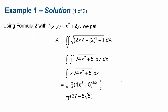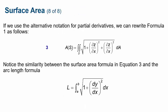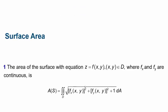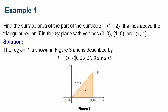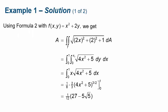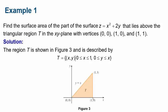Using our formula, take the partial derivative with respect to x — you get 2x — and we square that. The partial derivative with respect to y is just 2, we square that, and then we add 1. For the bounds: y goes from 0 to x, and x goes from 0 to 1.